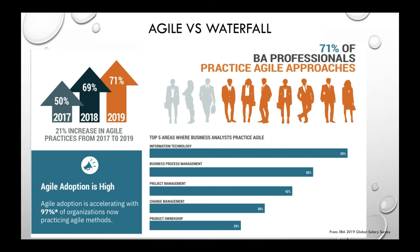The top five areas where business analysts practice agile include: information technology, business process management, project management, change management, and product ownership.